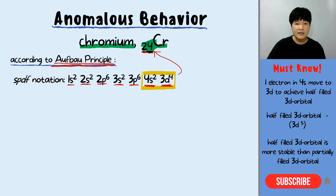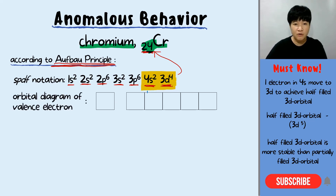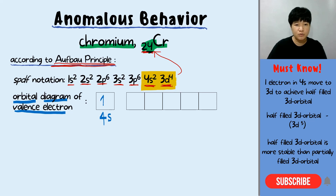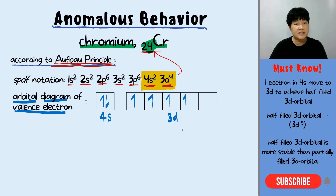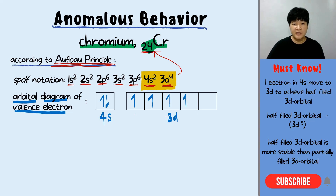From this spdf notation, the valence electrons are 4s and 3d. To have a better view, I want to draw the orbital diagram of the valence electrons only. The 4s has 2 electrons and the 3d has 4 electrons. According to Hund's rule, we fill electrons singly first in a set of degenerate orbitals. From this orbital diagram, you can see that the 3d orbital is only partially filled — it is 3d4, with 4 electrons.